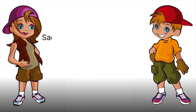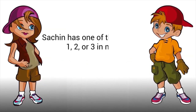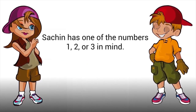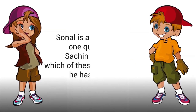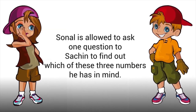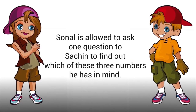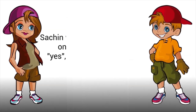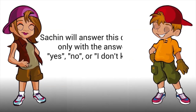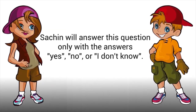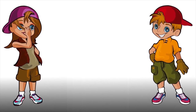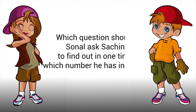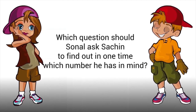Suchin has one of the numbers 1, 2, or 3 in mind. Sonal is allowed to ask one question to Suchin to find out which number he has in mind. Suchin will answer the question only with yes, no, or I don't know. Which question should Sonal ask Suchin to find out in one attempt which number he has in mind?